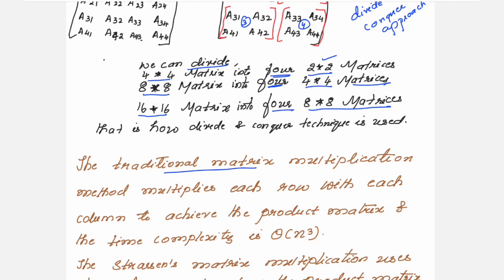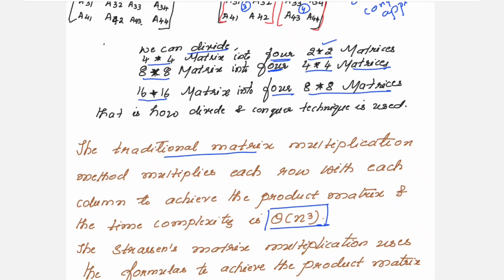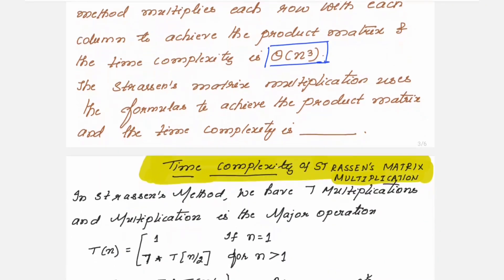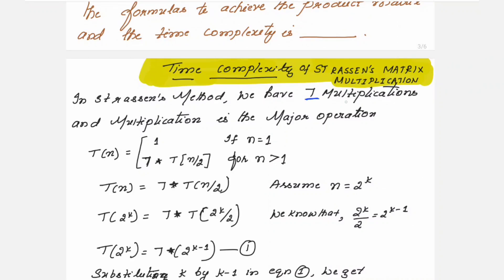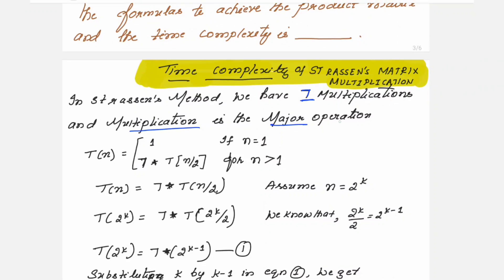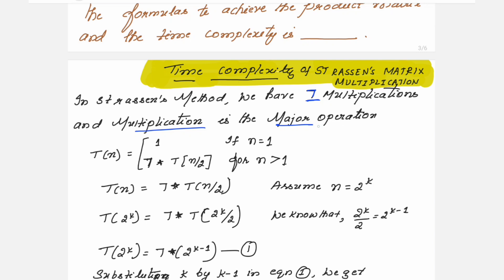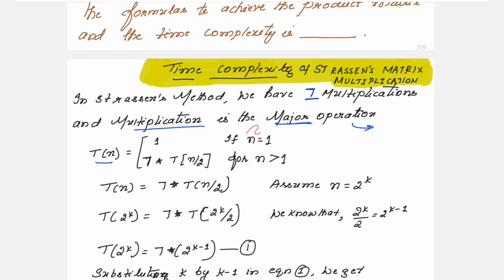One more important piece of information: traditional matrix multiplication has time complexity Θ(n³). Strassen's multiplication method reduces this. In Strassen's method we have 7 multiplications, and multiplication is the major operation, so when writing the recurrence relation we focus on multiplications. The recurrence is: T(n) = 1 if n = 1; otherwise T(n) = 7·T(n/2) for n > 1, since we have 7 multiplications and divide the problem into sub-problems of size n/2.